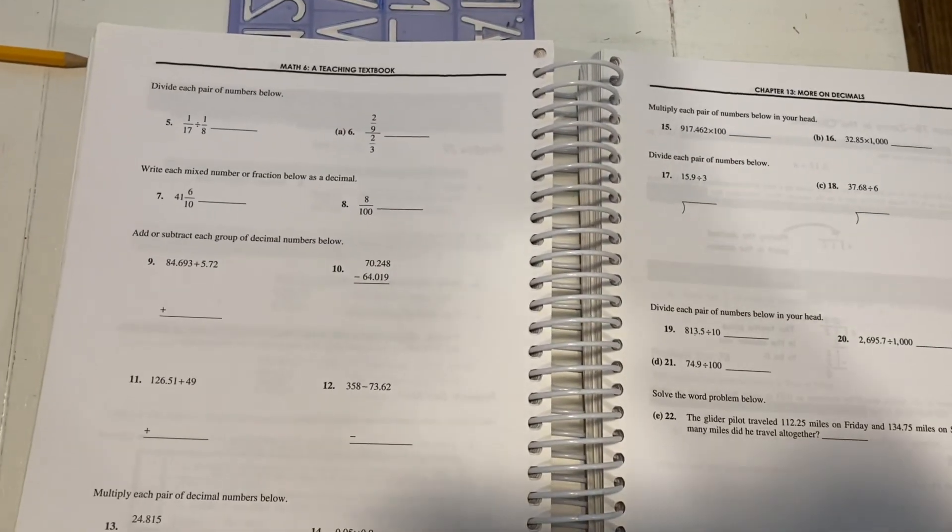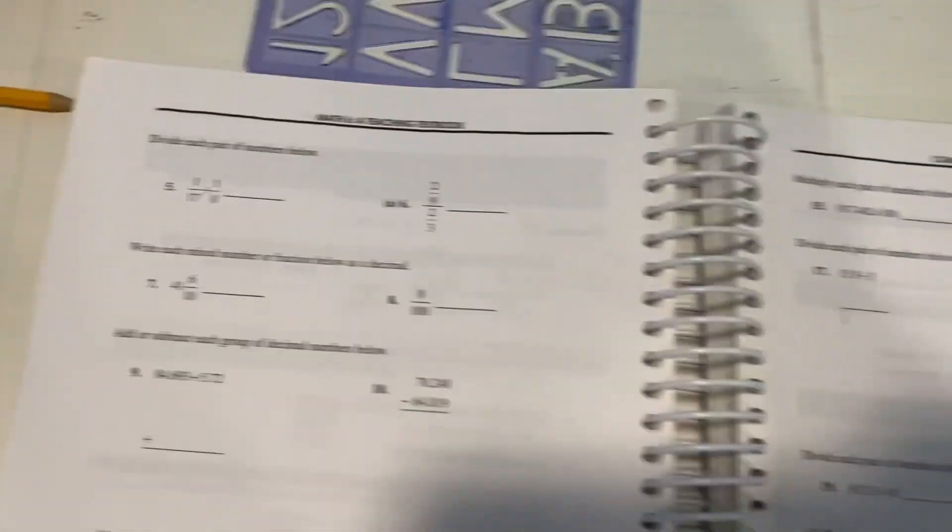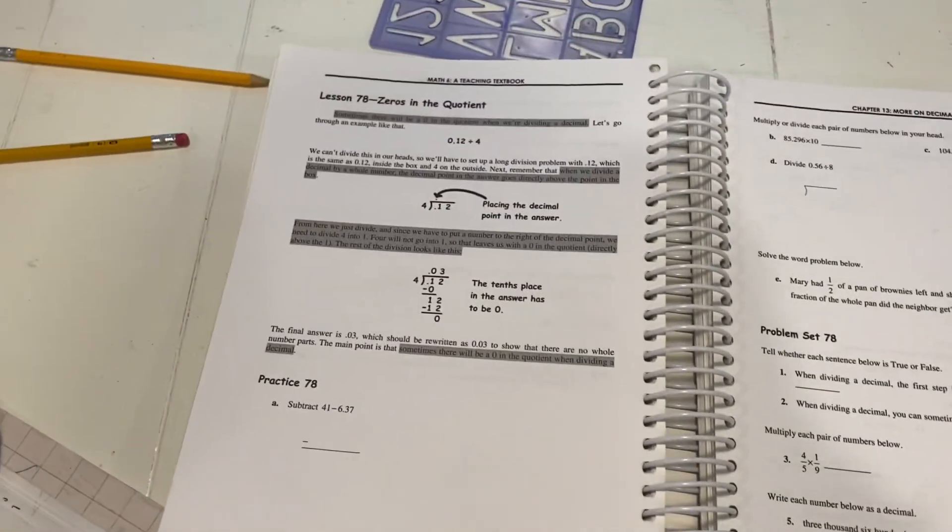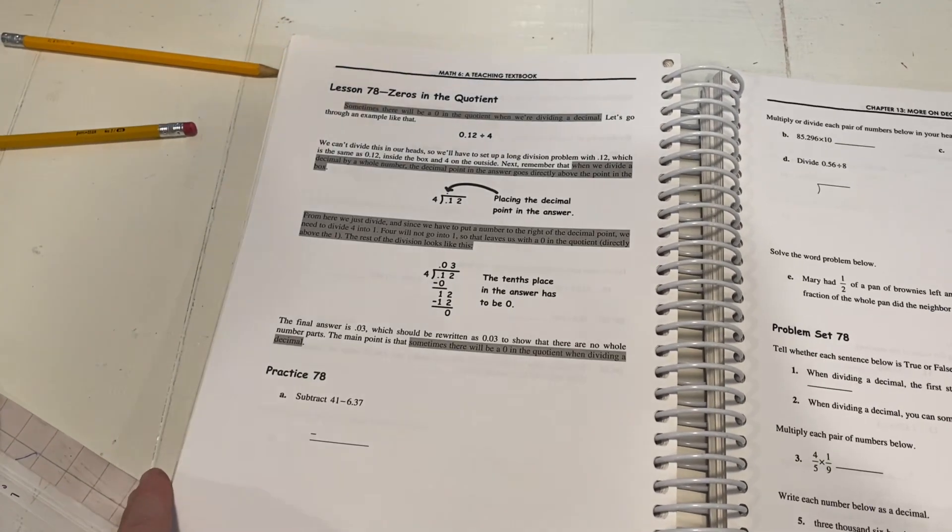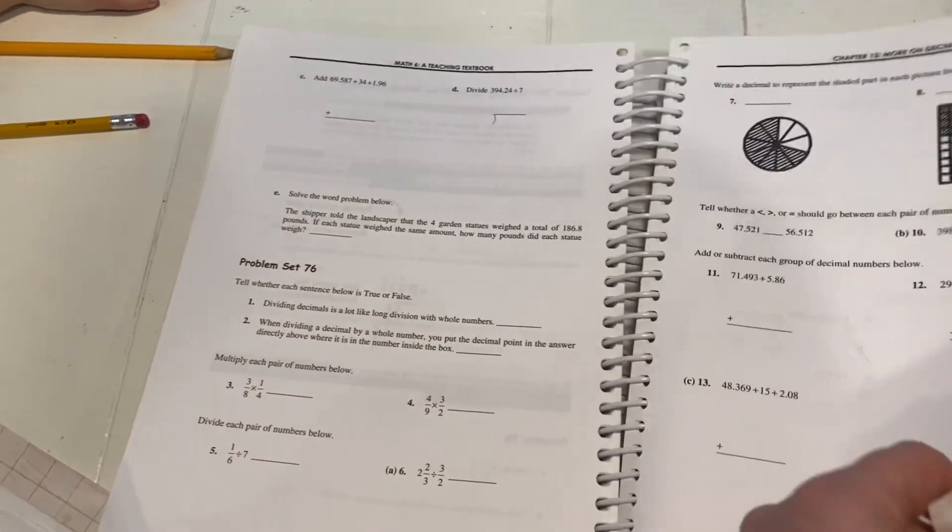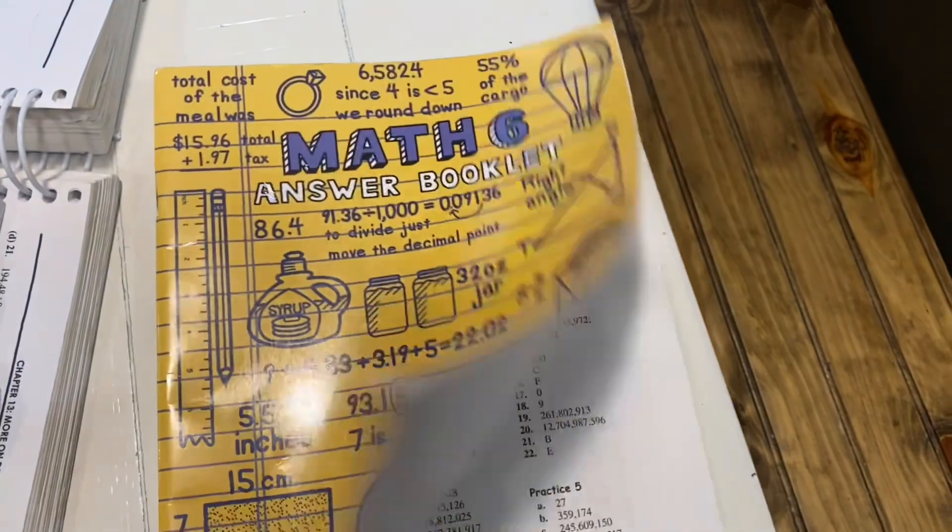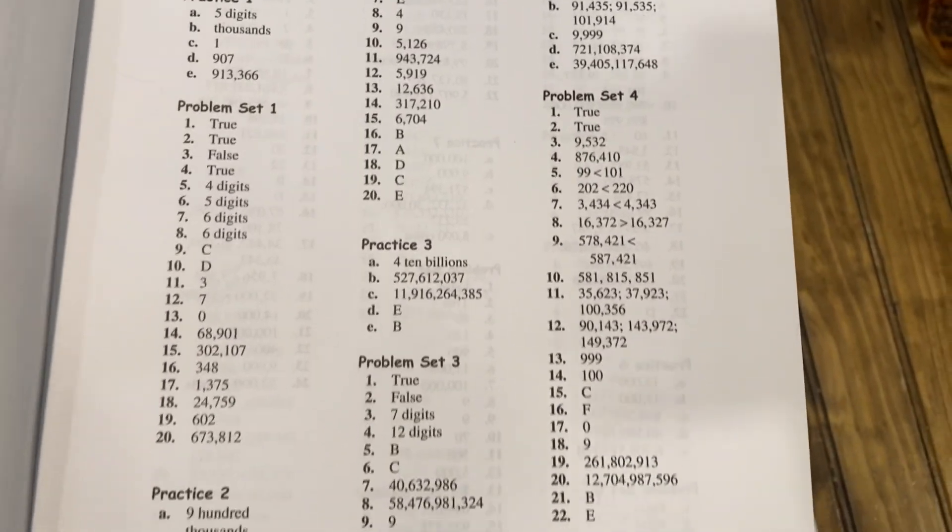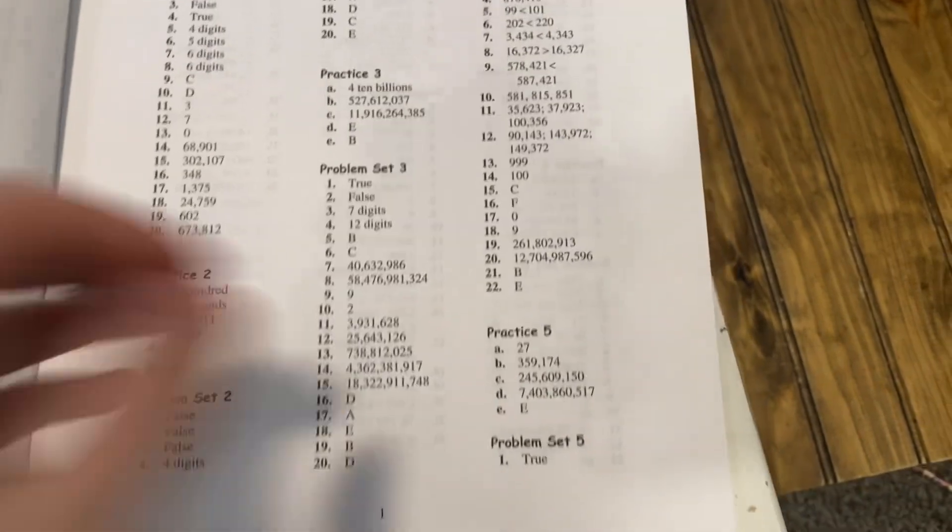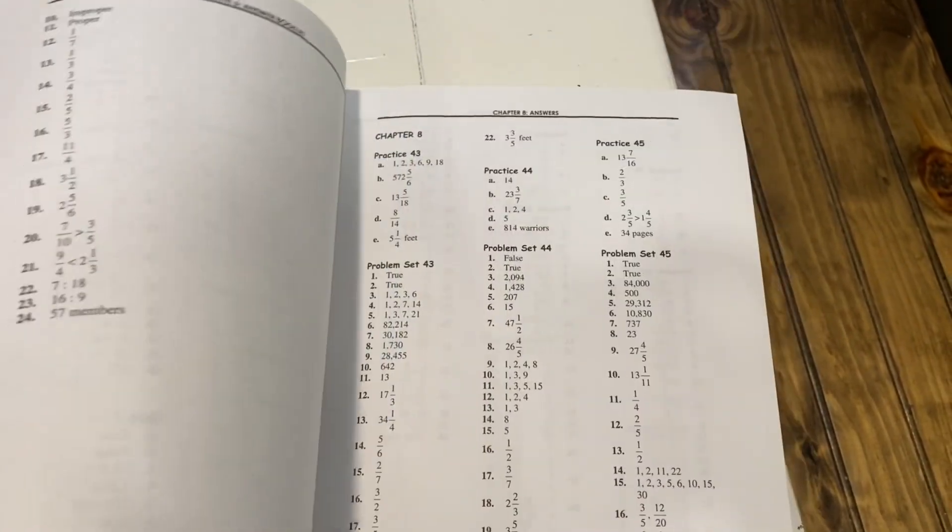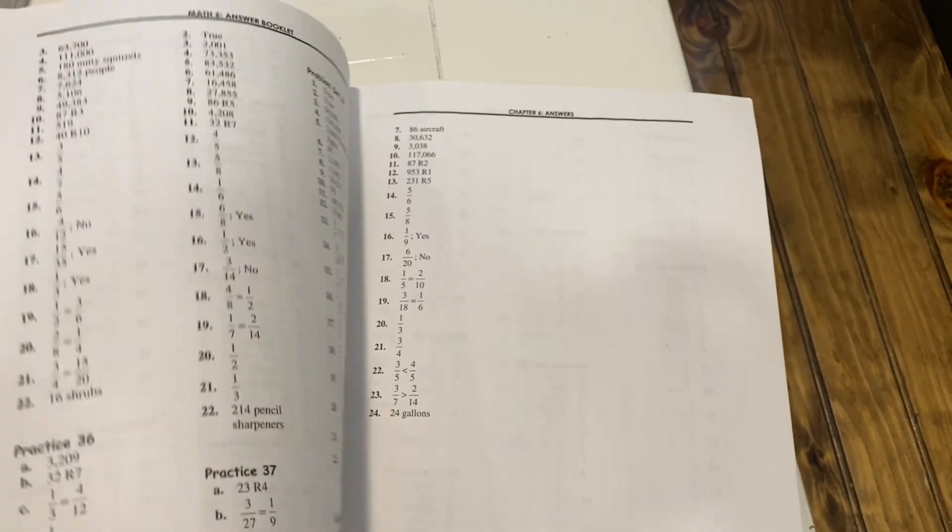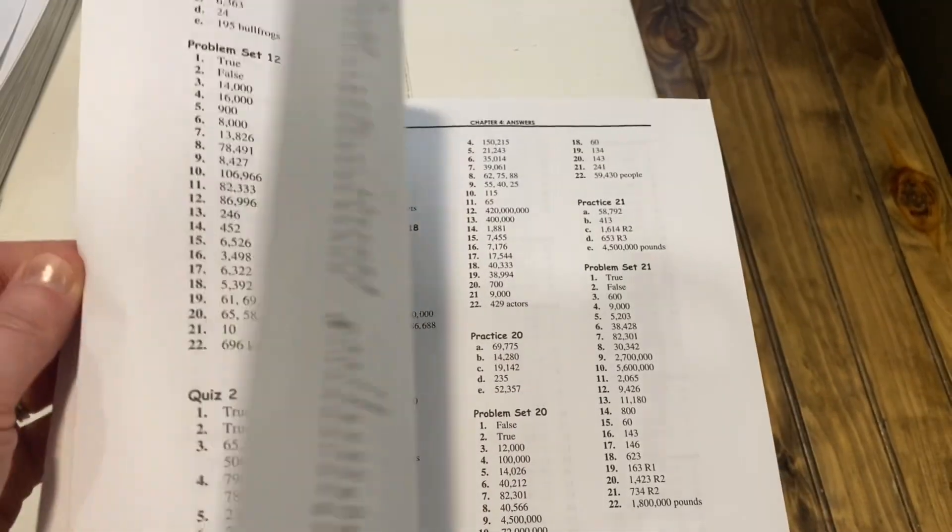This is how the workbook looks and like I said there's also a disc option if you wanted to do it on the computer which I do have my little guy doing. But it has the little lesson and then it shows you all the little problems and then it has the answer booklet where you just flip through and you can see where you messed up, what you did wrong and it's just super super simple. I love this so much.